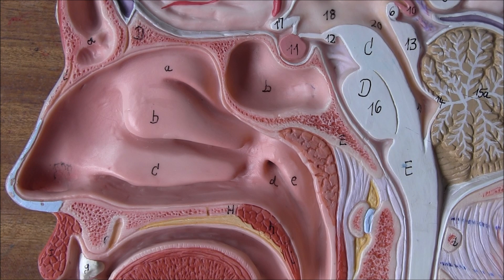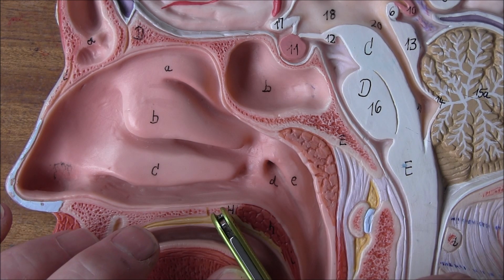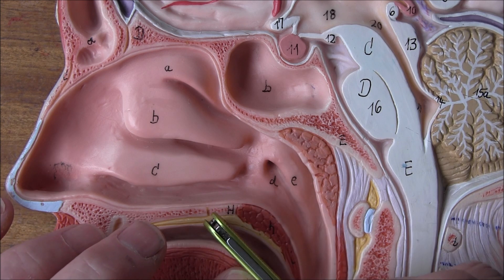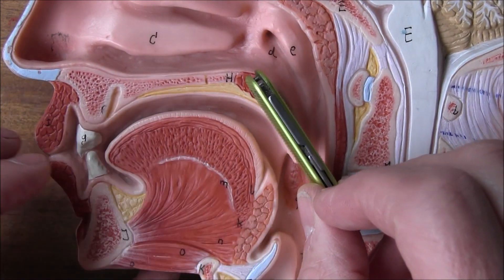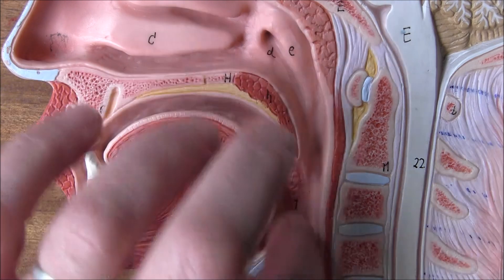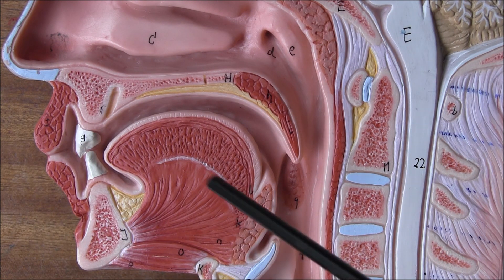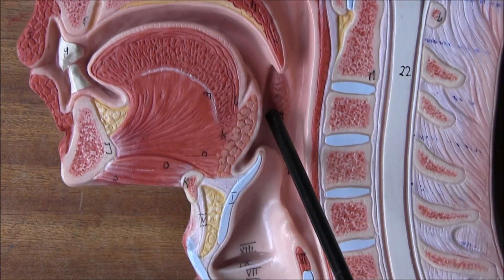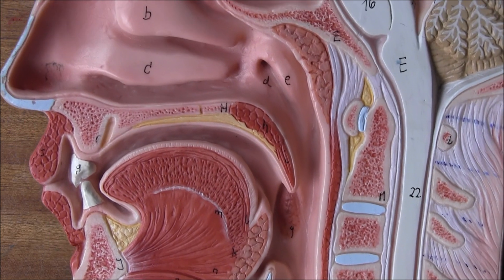Normally the soft palate would be relatively closed near the tongue — they would be in contact. But if a baby can't breathe through the nose, they should lift their soft palate. If the soft palate is no longer in contact with the tongue and it's opened, that opens the airway, allowing air to go through the mouth and down into the trachea.